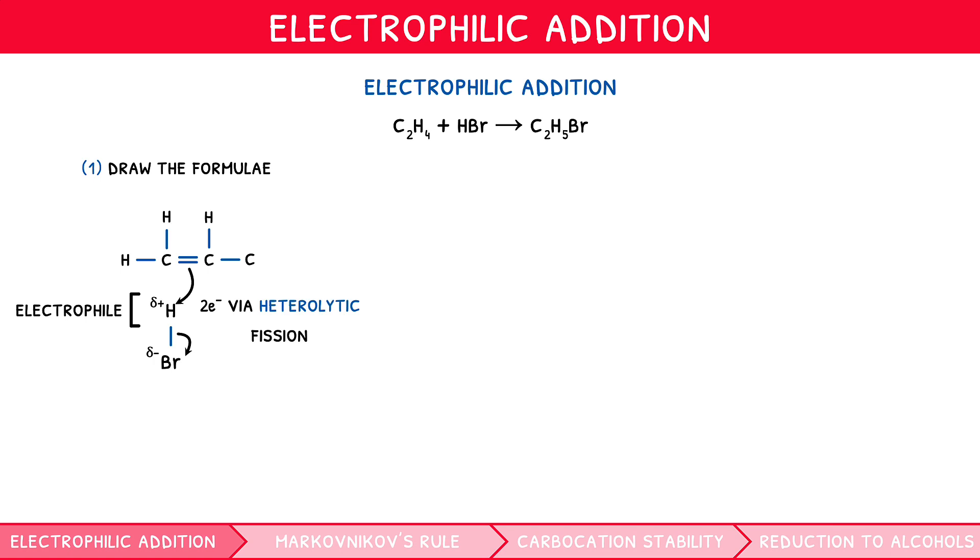The second stage of drawing the mechanism involves re-drawing the displayed formula, showing the now broken carbon-carbon double bond with a positive charge on one carbon and additional H bound to the other carbon, and the free halide ion with a lone pair and negative charge. Note the carbon bearing the positive charge is named a carbocation.